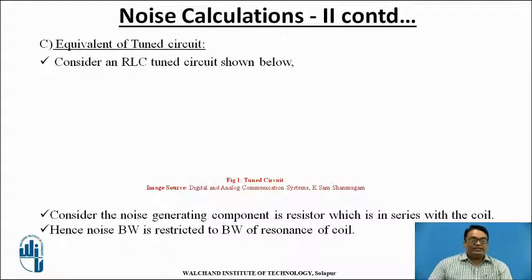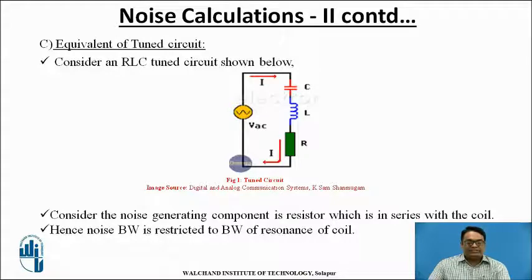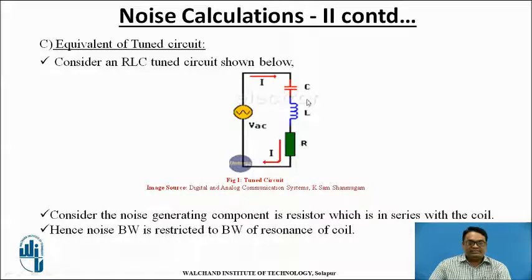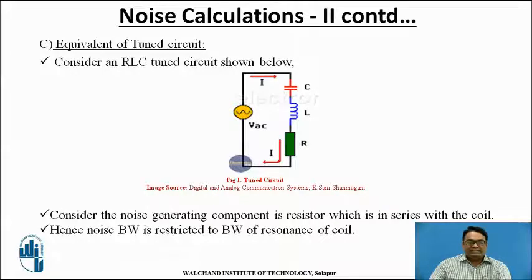Equivalent noise calculation can be done by considering a tuned circuit. This is the third method. As you can see, there is an RLC tuned circuit with a resistance, inductor, and capacitance with a supply given. The noise-generating component is the resistor, which is connected in series with the coil, the capacitor, and the inductor.